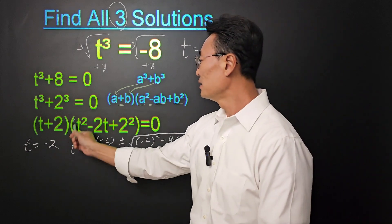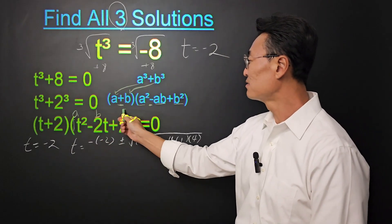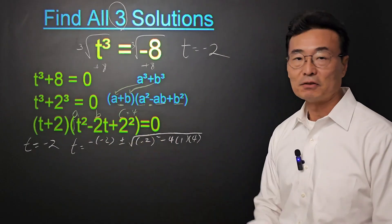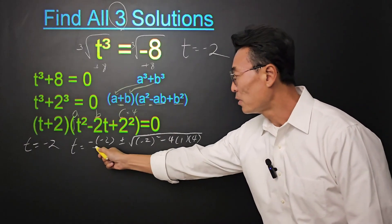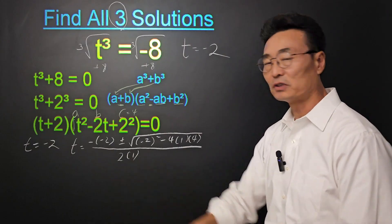So once again, a is 1, b is negative 2, and c is going to be the 4. We're going to put all of this over 2a, or 2 times 1.